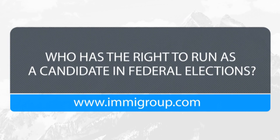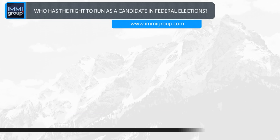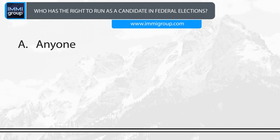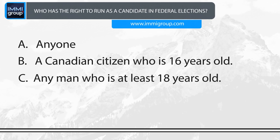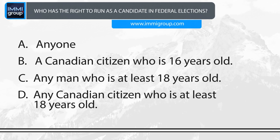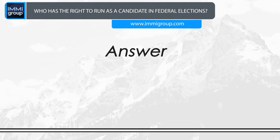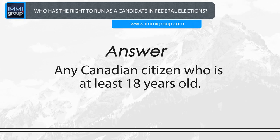Who has the right to run as a candidate in federal elections? A. Anyone. B. A Canadian citizen who is 16 years old. C. Any man who is at least 18 years old. D. Any Canadian citizen who is at least 18 years old. Answer: Any Canadian citizen who is at least 18 years old.